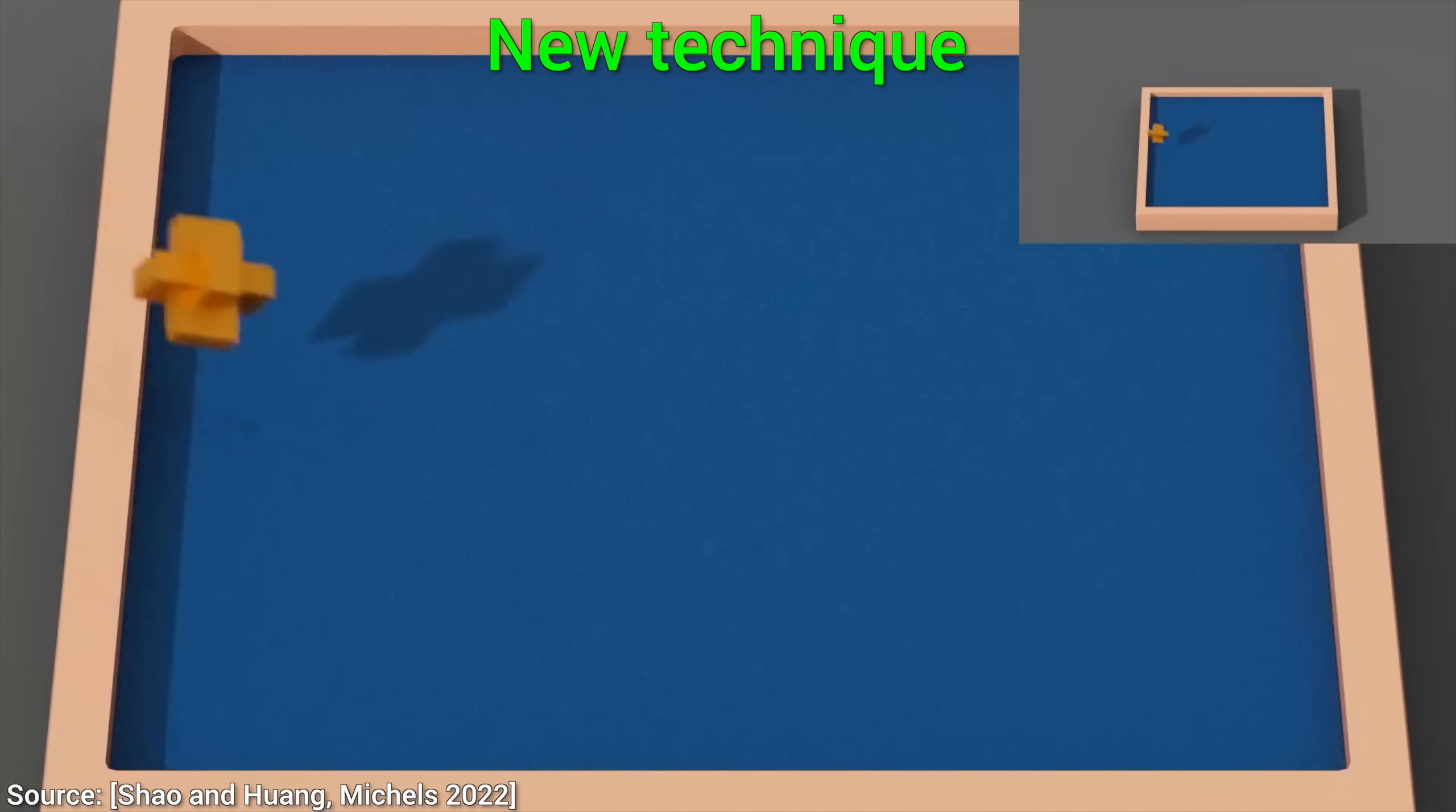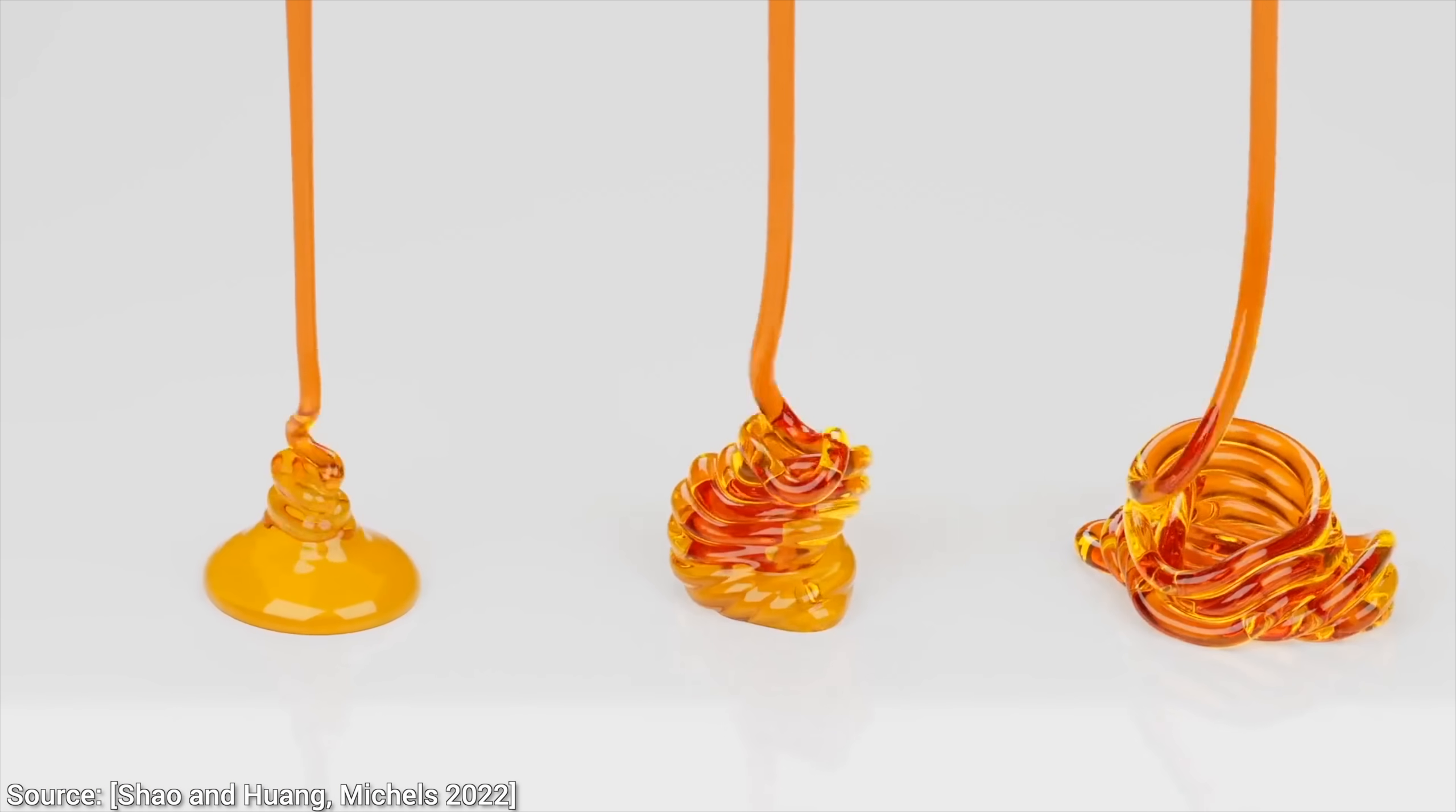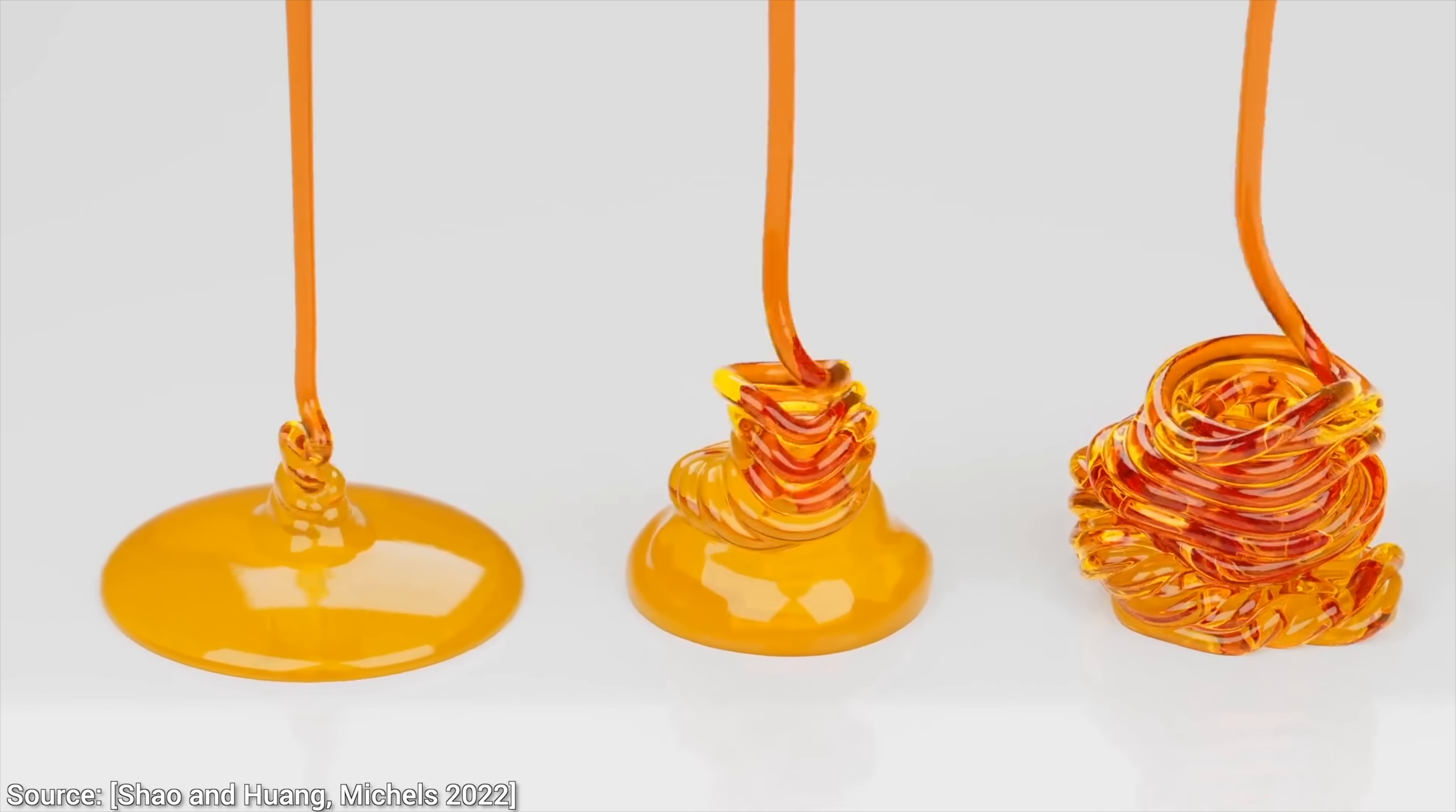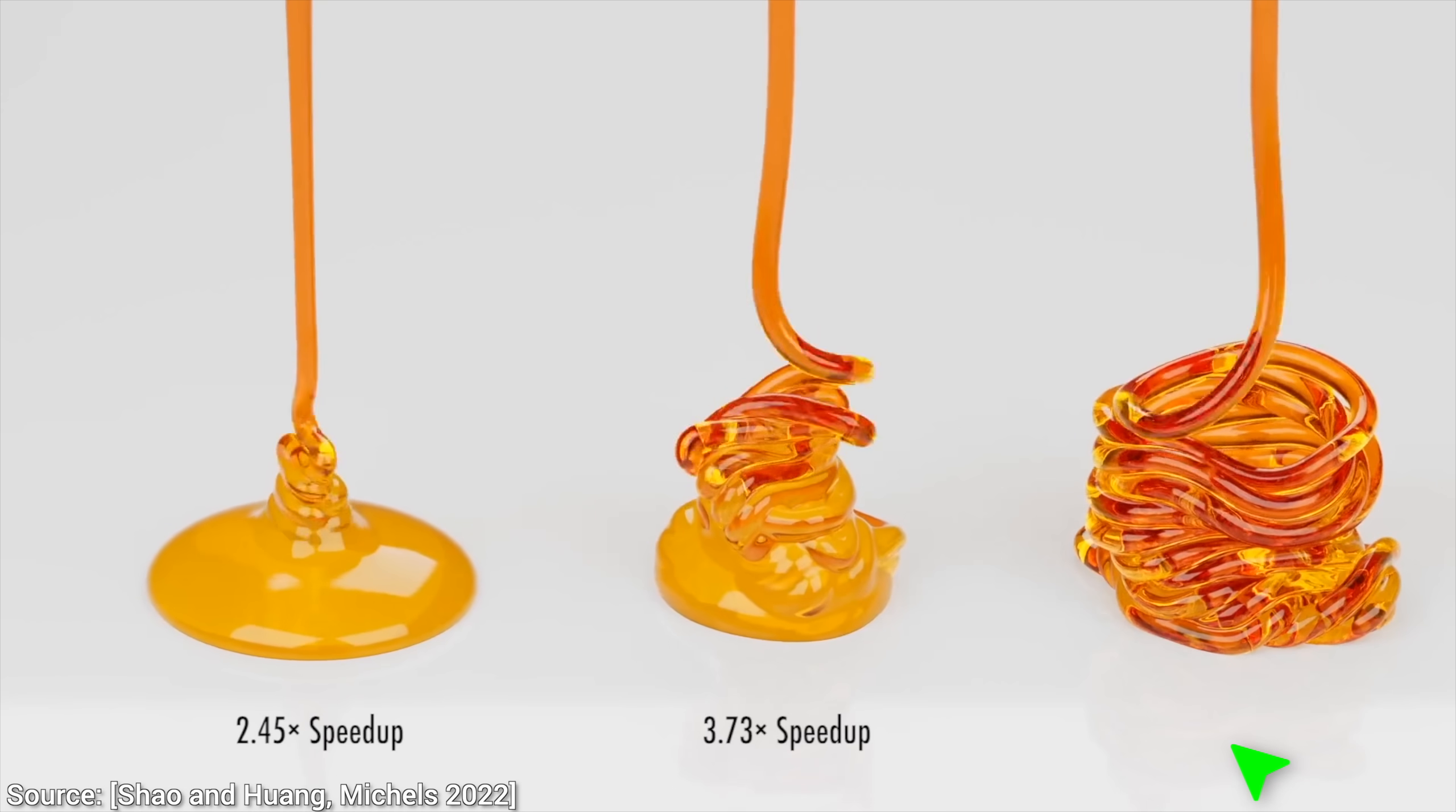Now, this technique is not only able to simulate this many particles, but it also does it faster than previous techniques. The speedup factor is typically 3x, but not on honey buckling scenes. Why is that? Well, the more viscous the fluids are, at the risk of simplification, let's say that the more honey-like they are, the higher the speedup. How much higher?